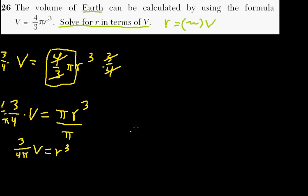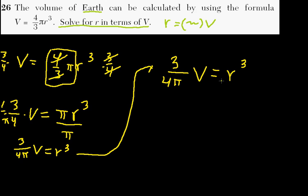Now from this stage, what we're going to do, I'll write it up here just so we have a little bit more space, we have three over four pi volume equals radius to the third. To get rid of this to the third power, we take the third root, or we raise everything to the one-third power. That will work just as well.